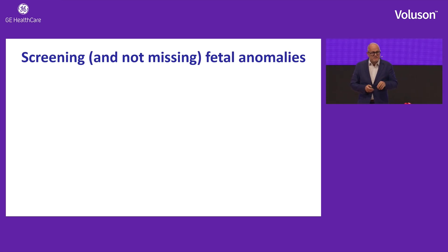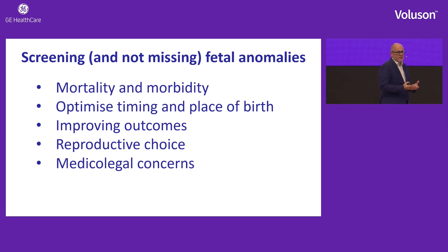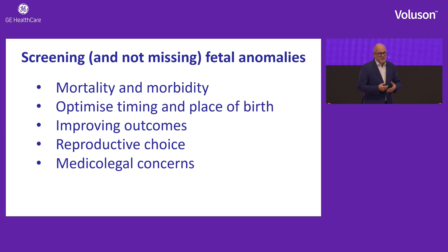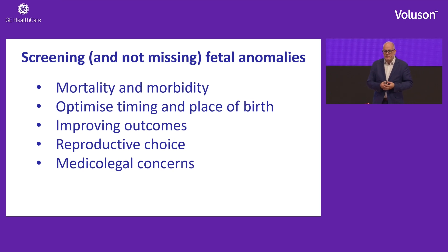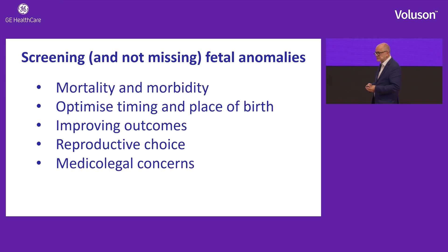This is really about screening and not missing fetal abnormalities. Why is it important not to miss abnormalities? Because abnormalities are associated with morbidity and mortality, in particular cardiac abnormalities — babies that have an abnormality that is missed do much worse in the perinatal period, especially for late cyanosing disease when the ductus closes. It allows you to optimize the timing and the place of birth, it improves outcomes, and couples will of course exercise their reproductive choice. We are always concerned about medical legal concerns too.